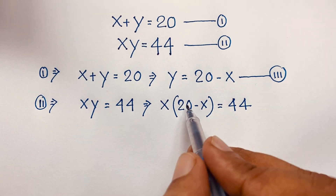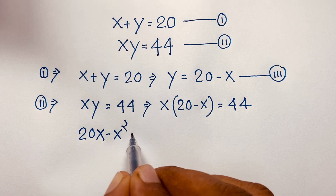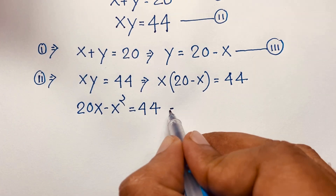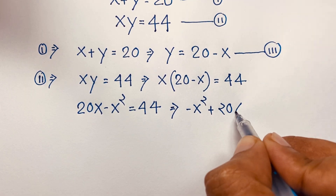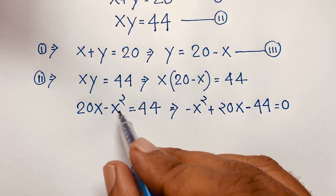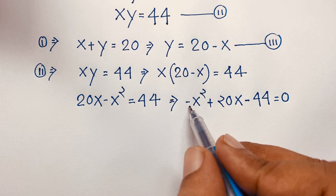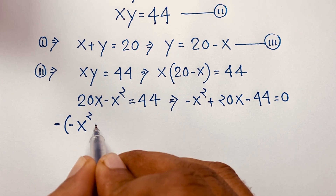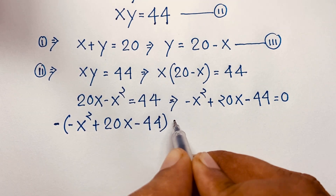Expanding gives 20x minus x squared equals 44. Rearranging into standard quadratic form: negative x squared plus 20x minus 44 equals 0. Multiplying both sides by negative 1, we get x squared minus 20x plus 44 equals 0. This is our quadratic equation.